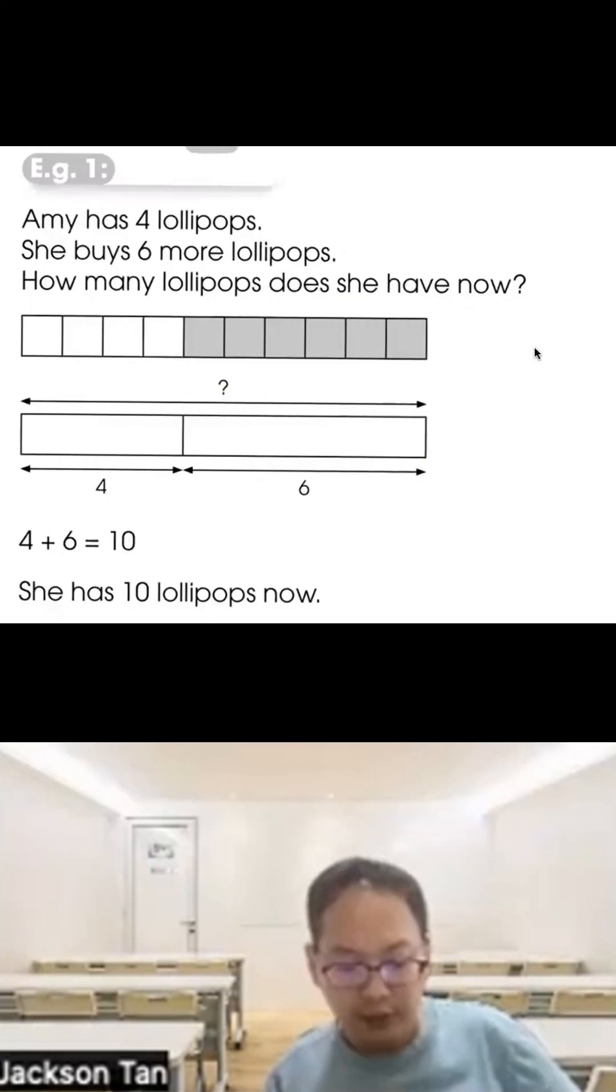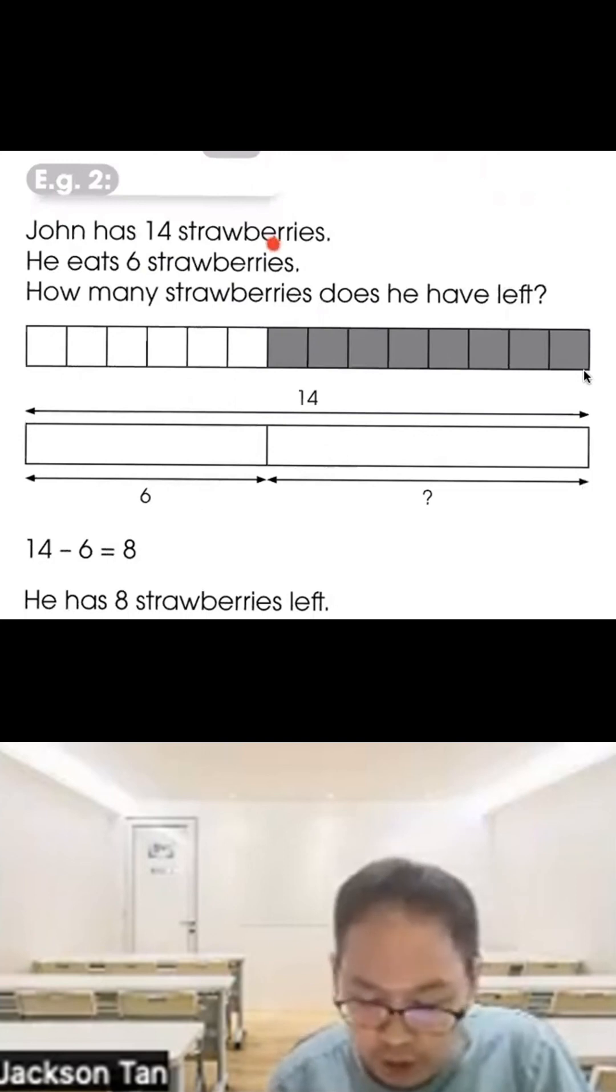Another example: John has 14 strawberries. He eats 6 strawberries. How many strawberries does he have left? Represent 14 using a big rectangle. Take away 6, so part of the box is 6. The other part is 14 minus 6 equals 8. He has 8 strawberries left.